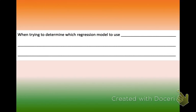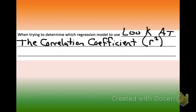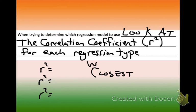When trying to determine which regression model to use, you should look at the correlation coefficient — which in your calculator is the lowercase r squared — for each regression type. You'll do each one out, list out the r squared values for each one, and see which one is closest to one. That should be the regression that you choose.